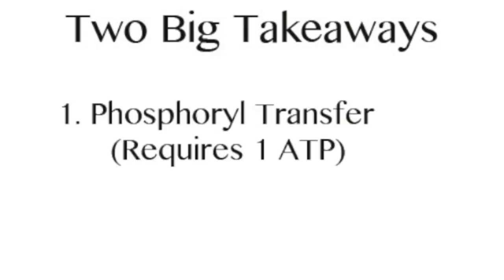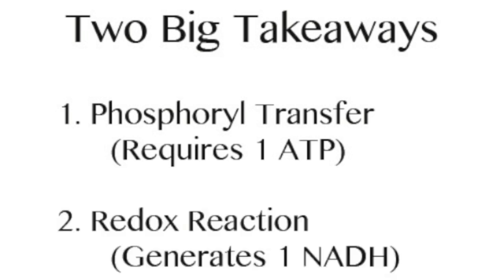The important takeaways are that the first step is a phosphoryl transfer that consumes one ATP and the second step is an oxidation reduction reaction that generates one NADH.